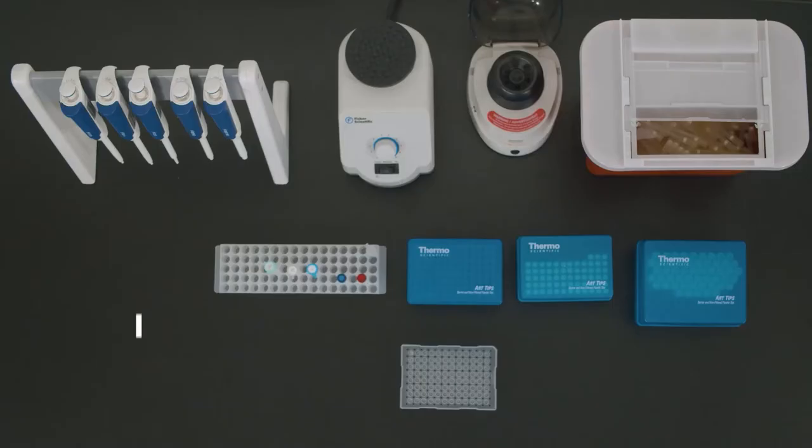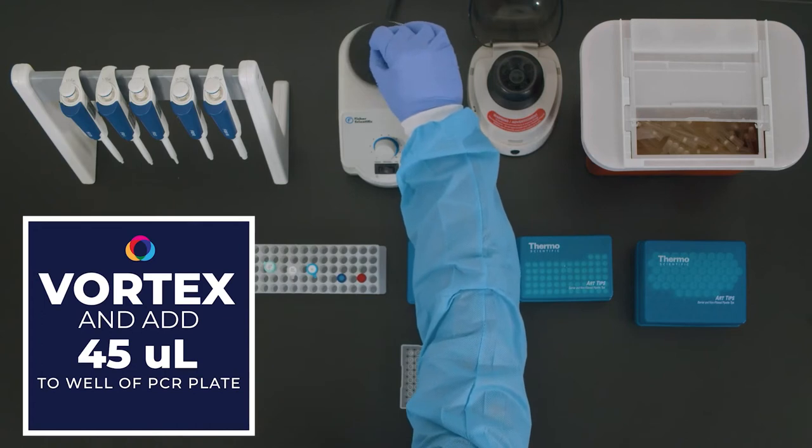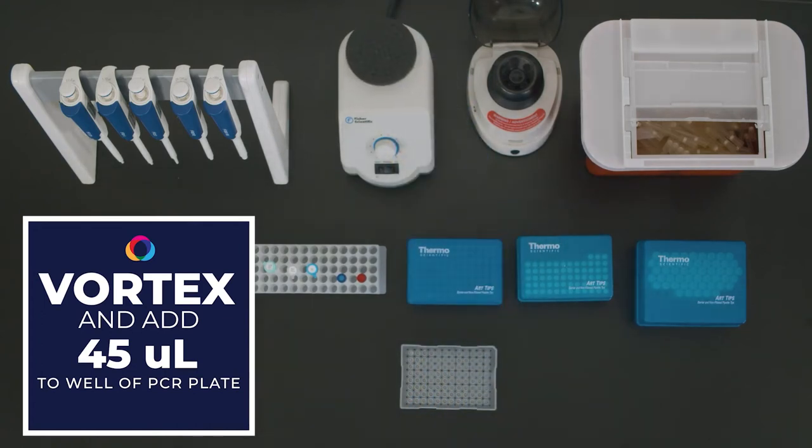Once the MasterMix is created, vortex and add 45 microliters to the designated wells of a PCR plate.